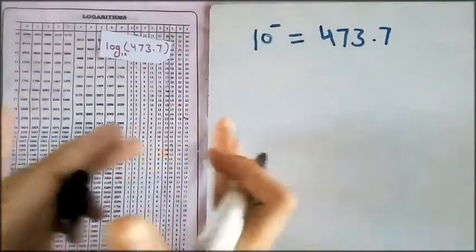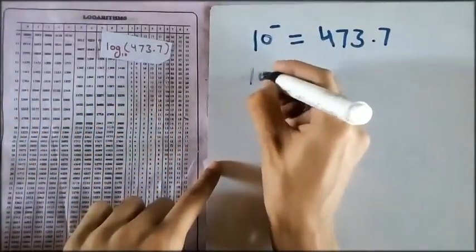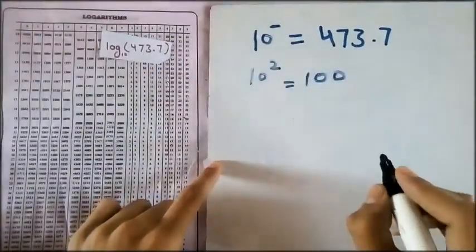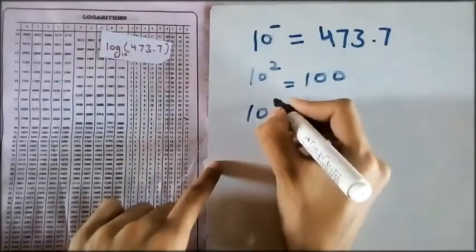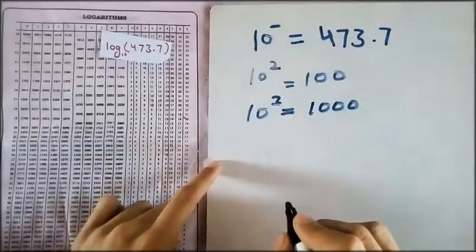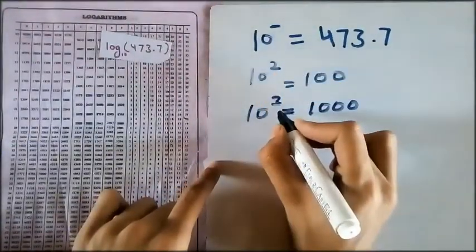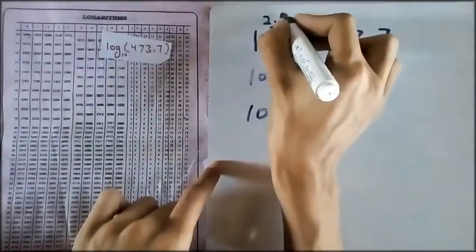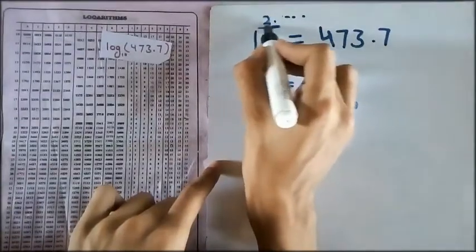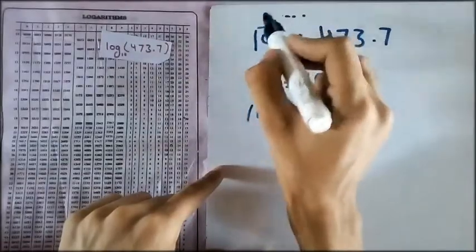So let's see what we have to find. We know that 10 square is equal to 100, right? And 10 cube is equal to 1000. So that power will be between 2 and 3. So that will be 2 point something, right? So this number is called the characteristic. We found the characteristic.